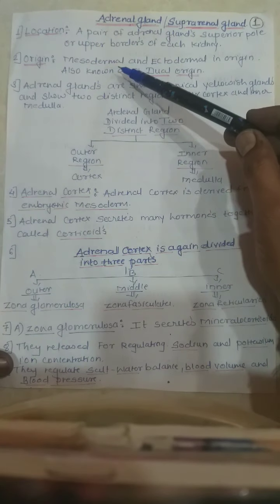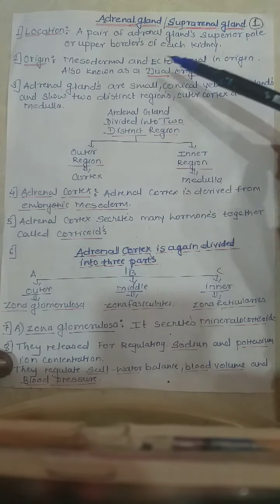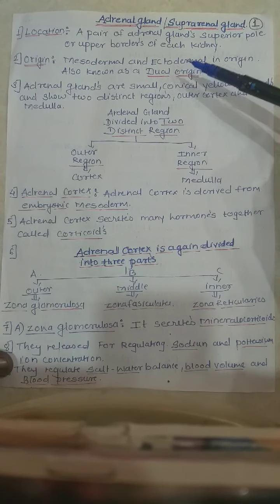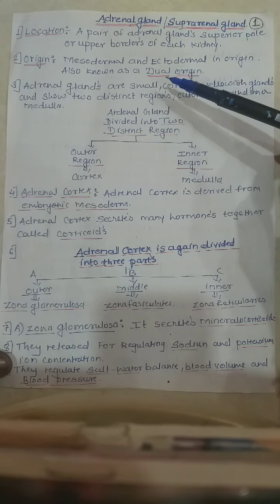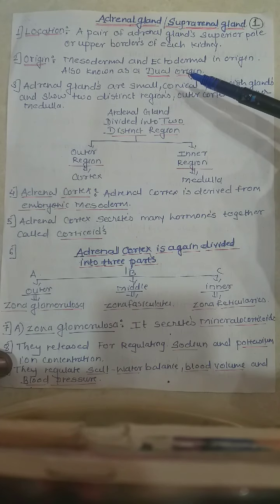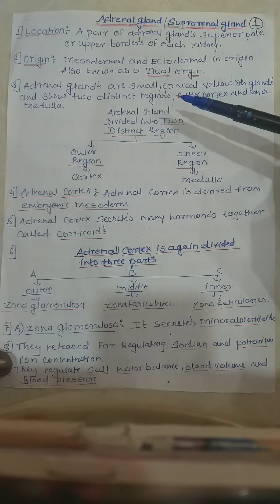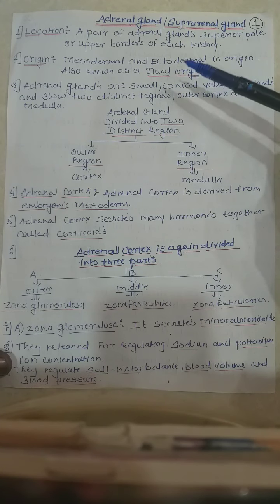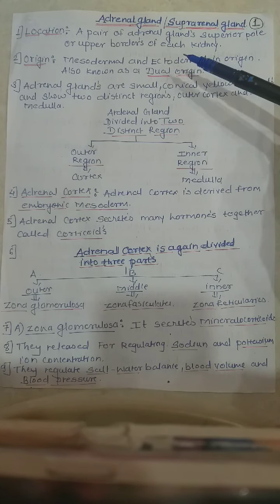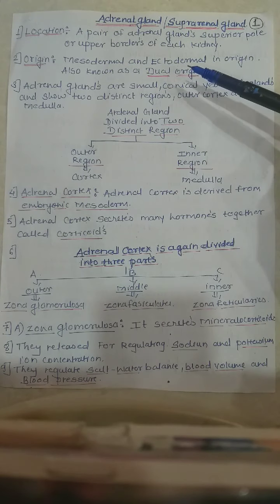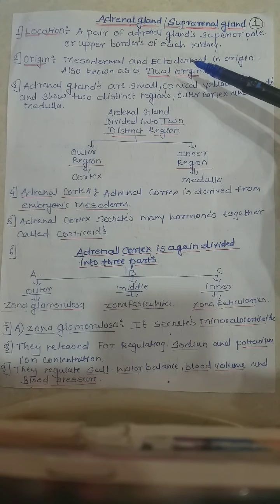The adrenal gland is mesodermal and ectodermal in origin, also known as a dual origin gland. It shows origin from two germ layers, that is mesoderm as well as ectoderm.